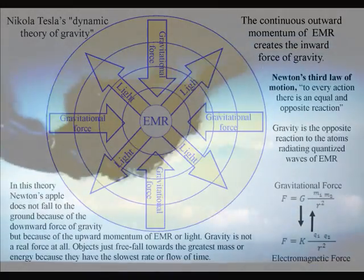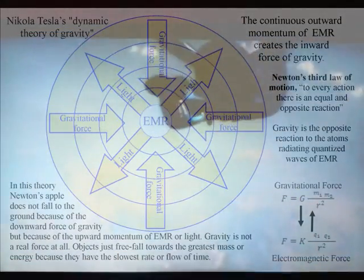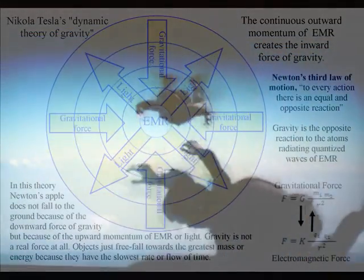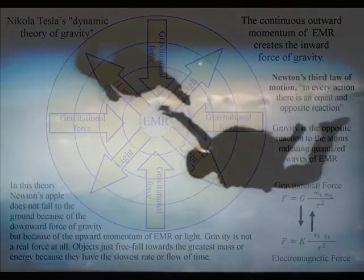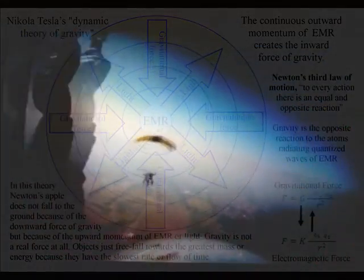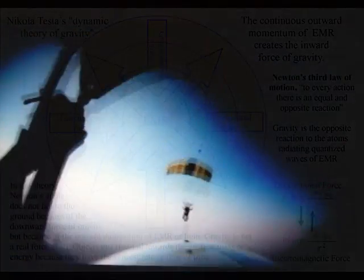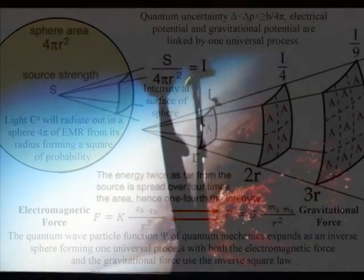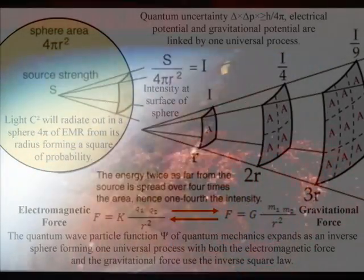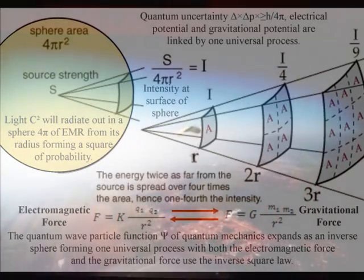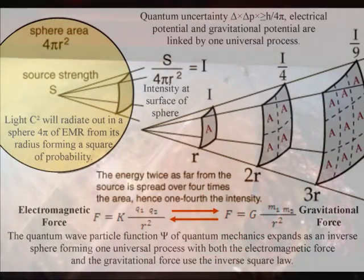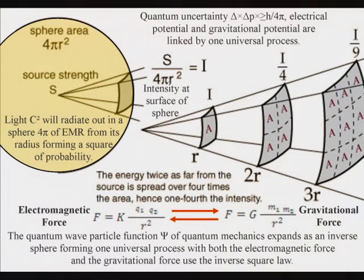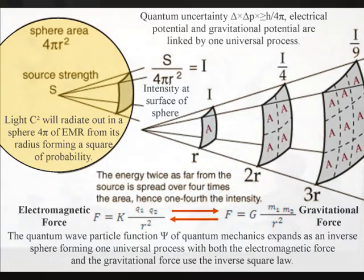Objects just freefall towards the greatest energy because it has the slowest rate of time, or the greatest time dilation. I believe this can be seen in the mathematics, with both the gravitational force and the electromagnetic force having the inverse square law. We have the inverse square law because the surface area of the light sphere increases with the square of the radius, and thus the strength of the gravitational field is inversely proportional to the square of the distance from the source.